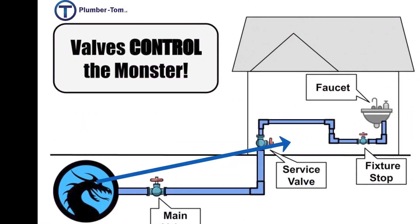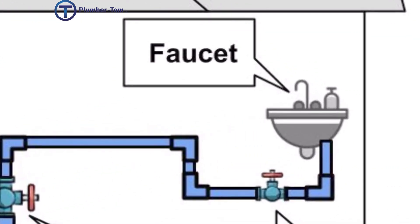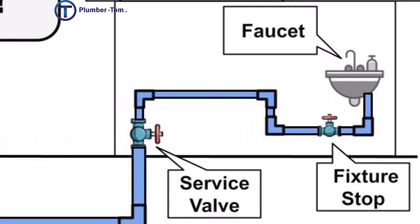This pressurized water monster would love nothing more than to come into your house and flood it. On the other hand, your intention is simply to wash your hands. So how do we make sure that as you wash your hands the monster does not get out? Follow the valves. The faucet itself is a valve to control on and off, but if the faucet fails, we have a fixture stop somewhere below the faucet — that is another valve that can shut off the water if there is a leak or a flood.